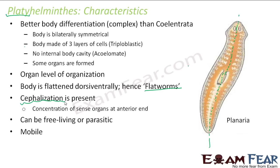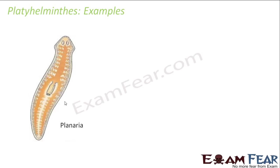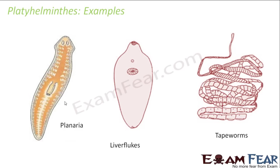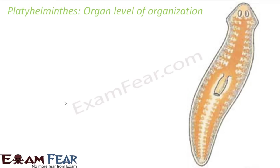Examples of Platyhelminths include Planaria, liver flukes, and tapeworms. Now let us try to understand the structure of Platyhelminths and their organ level of organization, looking at what organs are developed and what functions they perform.